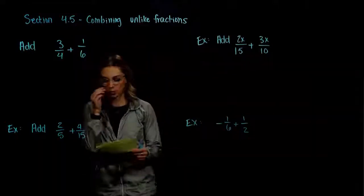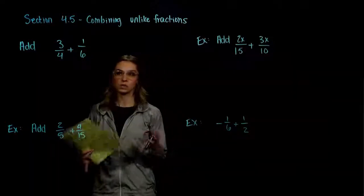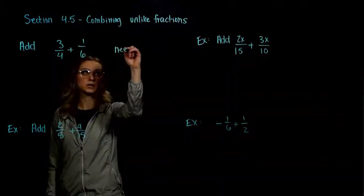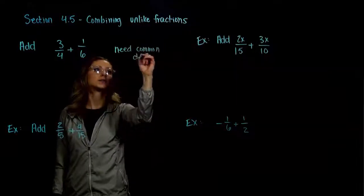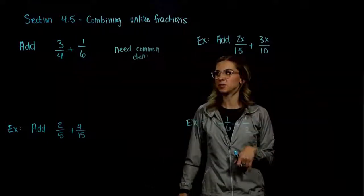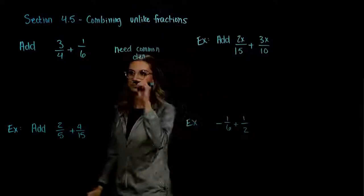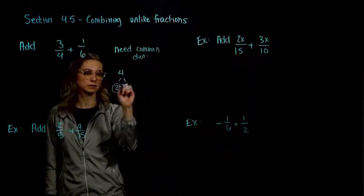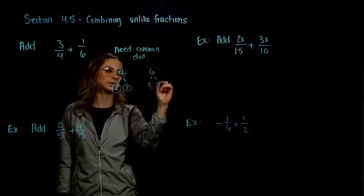Let's take the first example: we want to add together 3 fourths and 1 sixth. We don't have common denominators and we need common denominators. So let's first work at figuring out what is the least common between 4 and 6. We're going to take 4 and break it into its primes, and we're going to take 6 and break it into its primes.